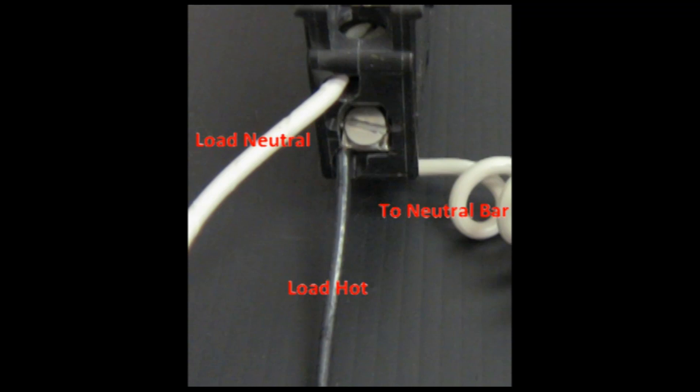You can see this clearly from the other shot. The black wire goes into the load, the straight white wire goes into the neutral lug, and the curly wire terminates in the neutral bar in the panel.